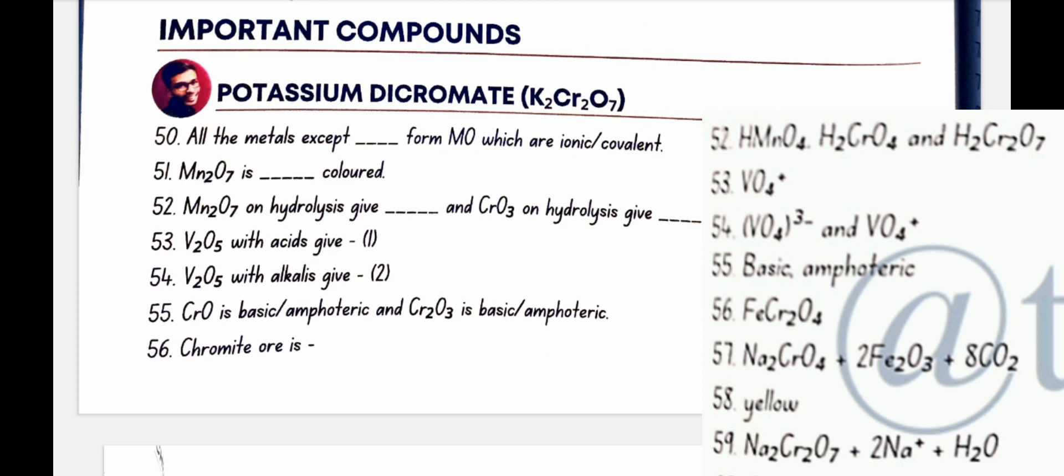V2O5 with acids give VO2 plus. V2O5 with alkalis give VO4 3 minus. CrO is basic and Cr2O3 is amphoteric.